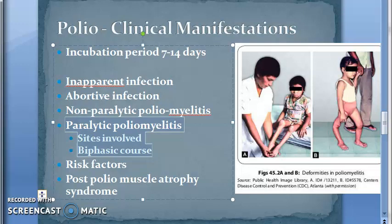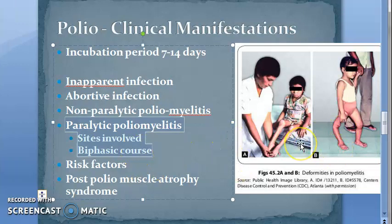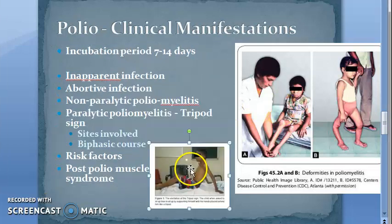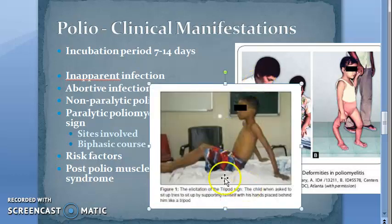In paralytic poliomyelitis, there is descending asymmetric acute flaccid paralysis. The proximal muscles are involved earlier than the distal muscles, so the paralysis starts at the hip and proceeds towards the extremities. There is a tripod sign — the child sits with flexed hip and both arms extended towards the back for support.